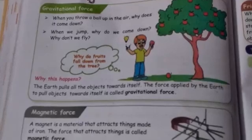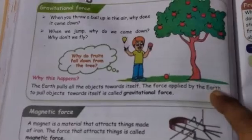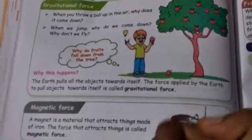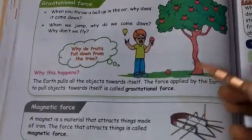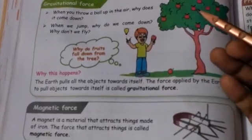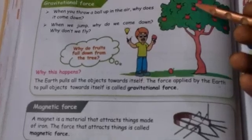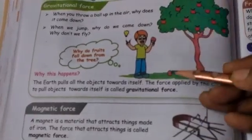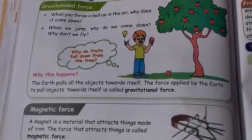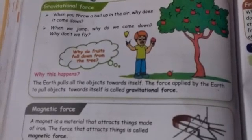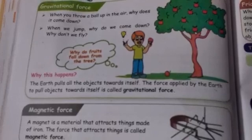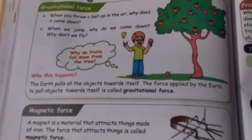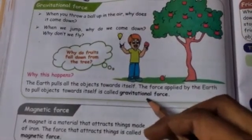Earth is where we live. The force applied by the earth pulls whichever object is on top of the earth towards itself. This is called gravitational force. A very old example is the apple falling from the tree. When an apple falls from the tree, it comes directly to the ground. Same way, if you throw a ball into the sky, after some time it comes down and hits the ground — because of the gravitational force pulling that object towards the earth.